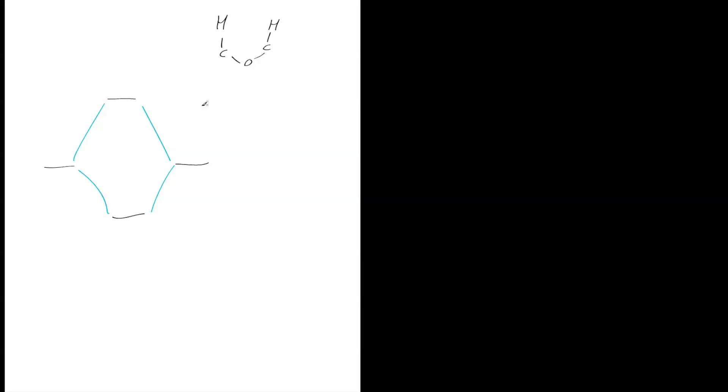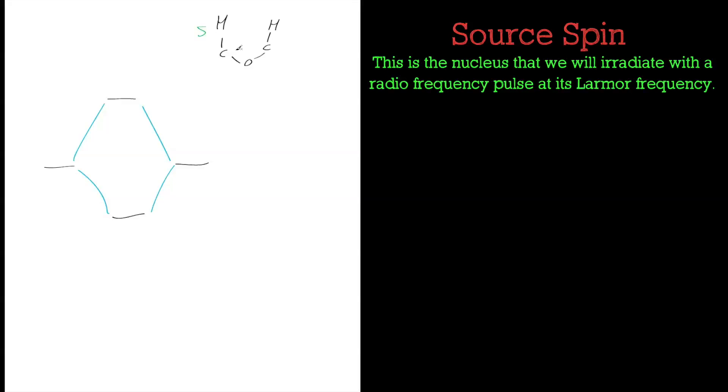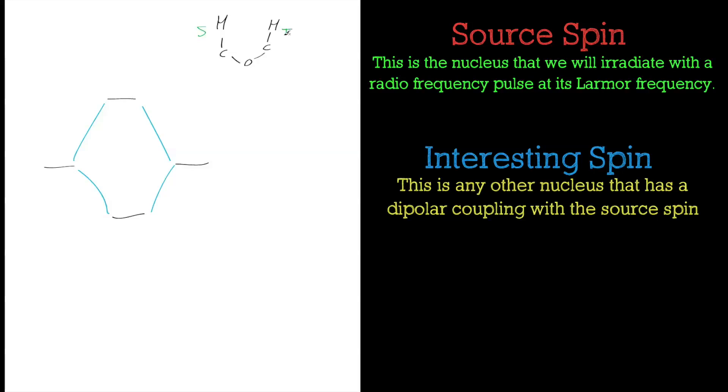These two little bar magnets represent the source and the interesting spin. It's that local interaction that provides mechanism for the relaxation of those particular nuclei, which then leads to an NOE effect. Let's have a look at the origin of the NOE effect itself. We take the ether that we've been looking at and introduce some nomenclature. The nucleus that we're going to irradiate, we'll call the source spin, labeled as S.